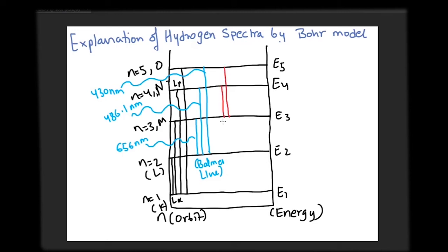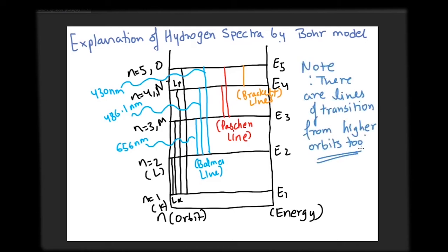Similar transitions from higher orbits to orbits of n equals 3, 4, and 5 result in the Paschen, Bracket, and Pfund lines respectively.